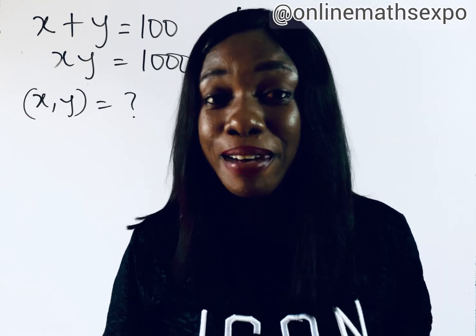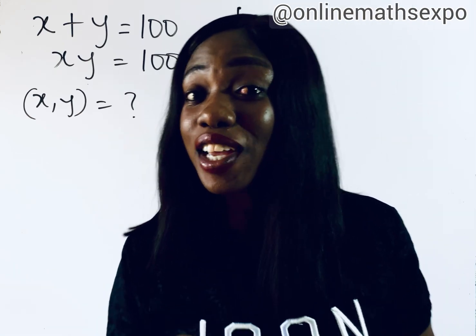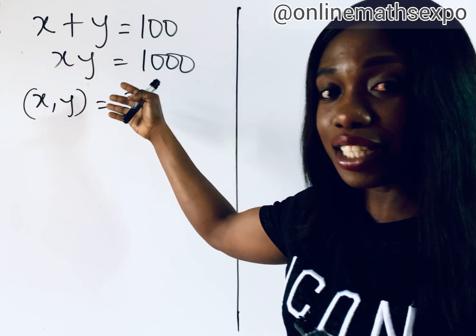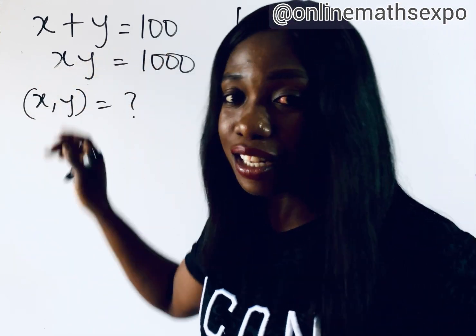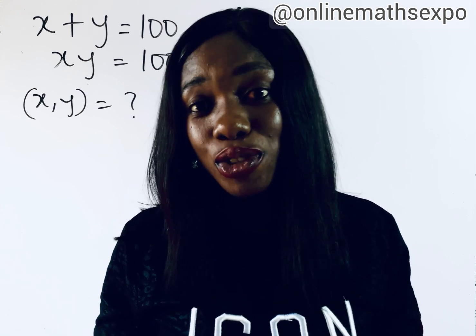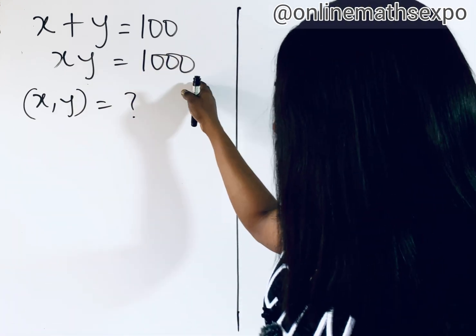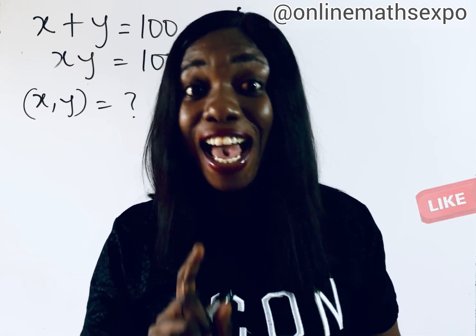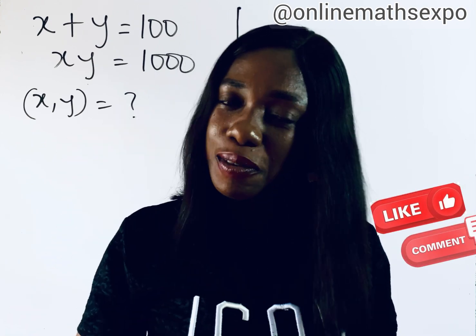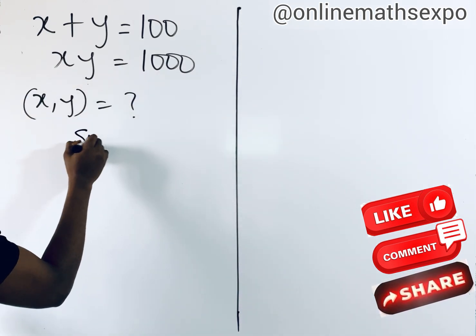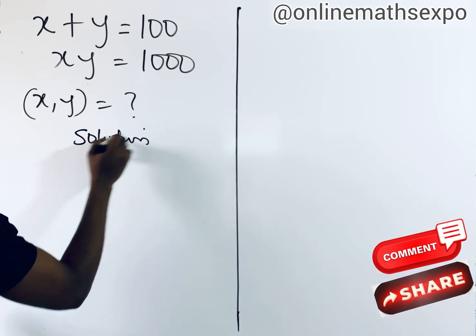Hello, wonderful one! Welcome. In this tutorial you're going to learn how to solve this beautiful math olympiad equation. This is a system of equations — also called simultaneous equations — because you have two equations and two variables to find. Let's do this together.